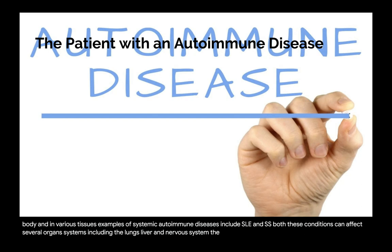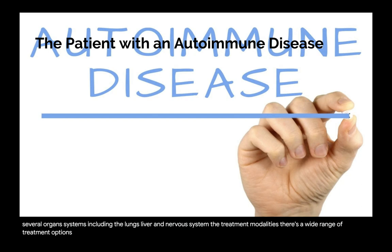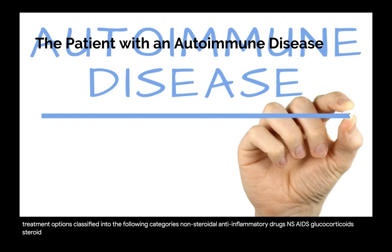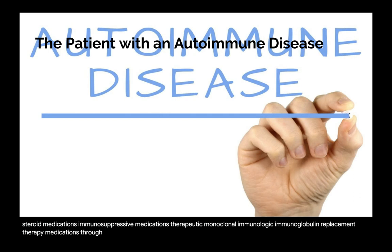There is a wide range of treatment options for autoimmune diseases, classified into: NSAIDs, glucocorticosteroid medications, immunosuppressive medications, therapeutic monoclonals, immunoglobulin replacement therapy, and medications to replace hormones secreted by the target organs, such as thyroxine in autoimmune thyroid disease.